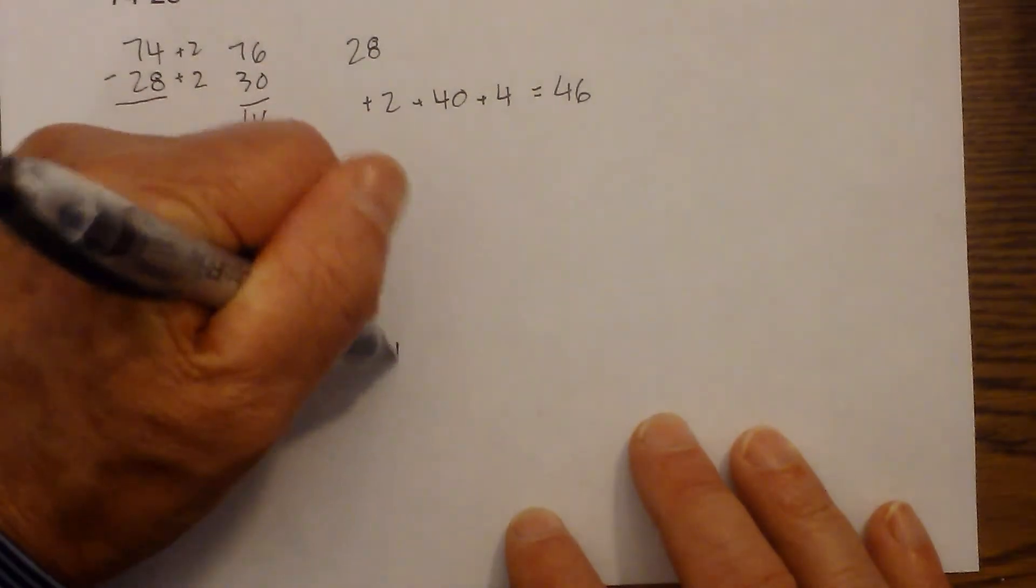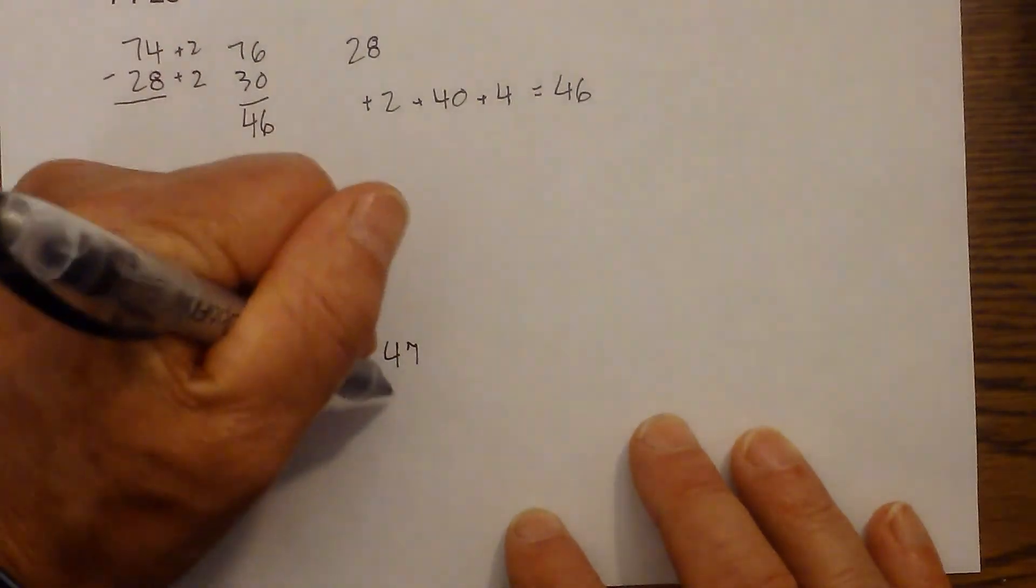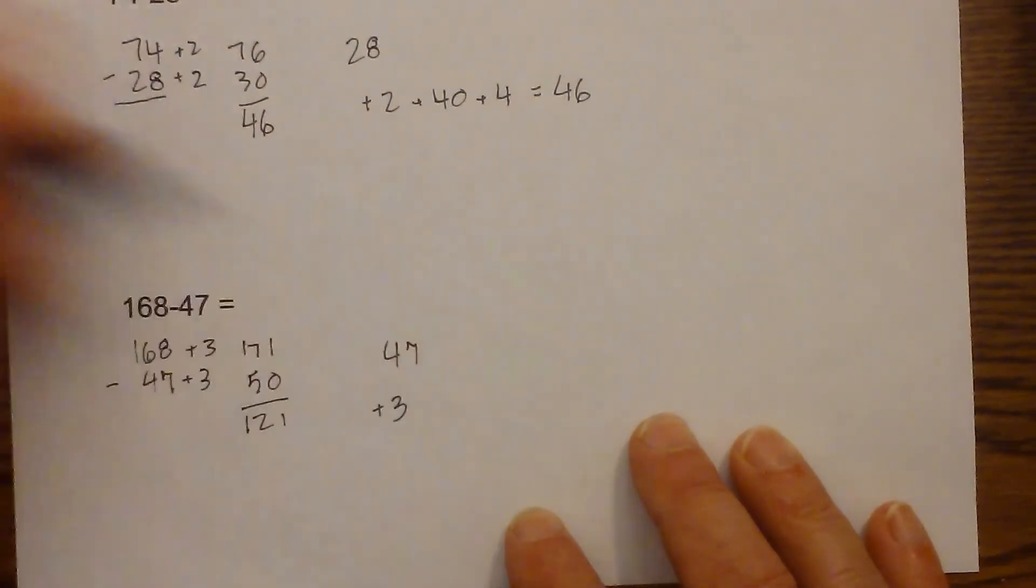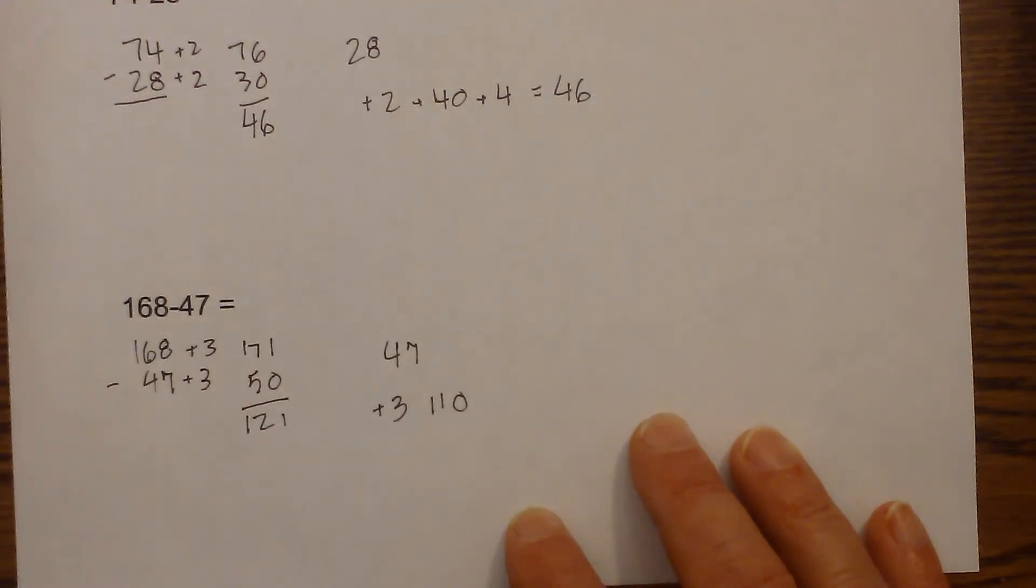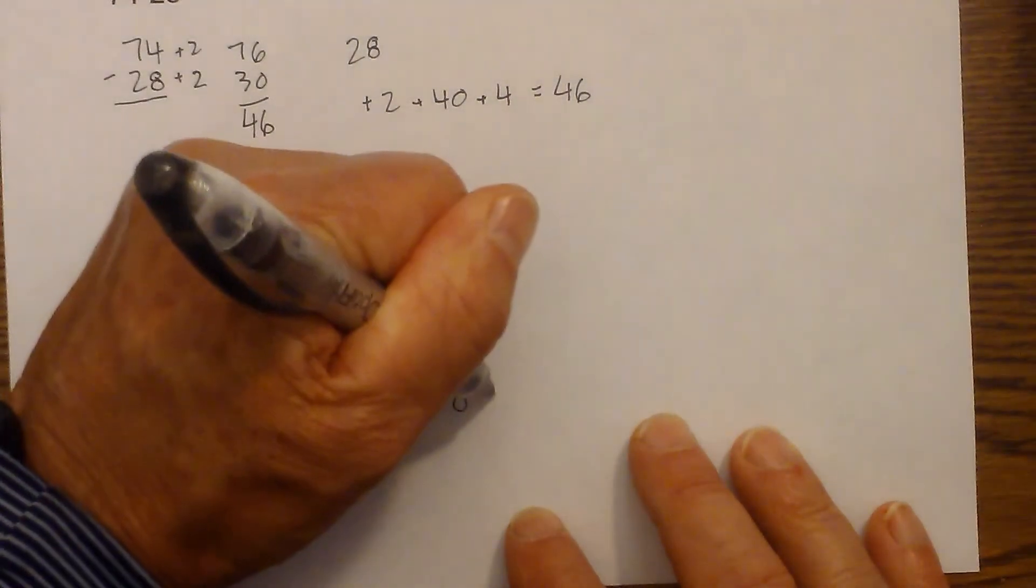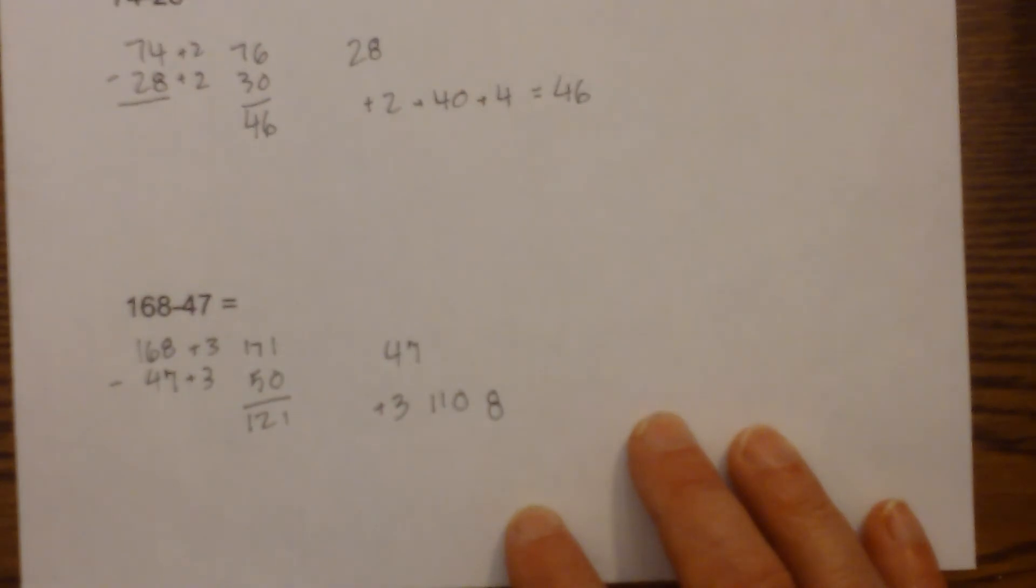Or I am going to add 47 plus 3 gets me to 50. And then plus 110 gets me to 160 plus 8 gets me to 168. 8 plus 3 is 11, 11 plus 110 is 121.